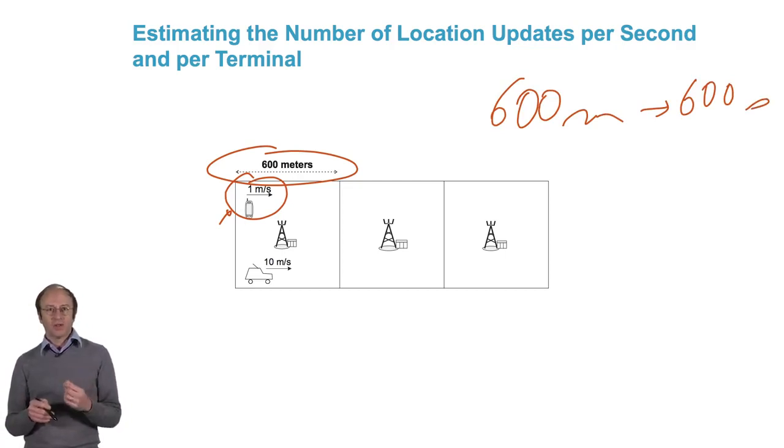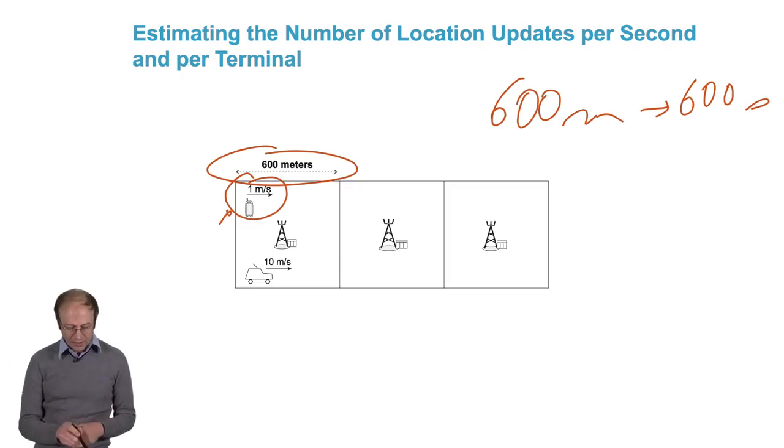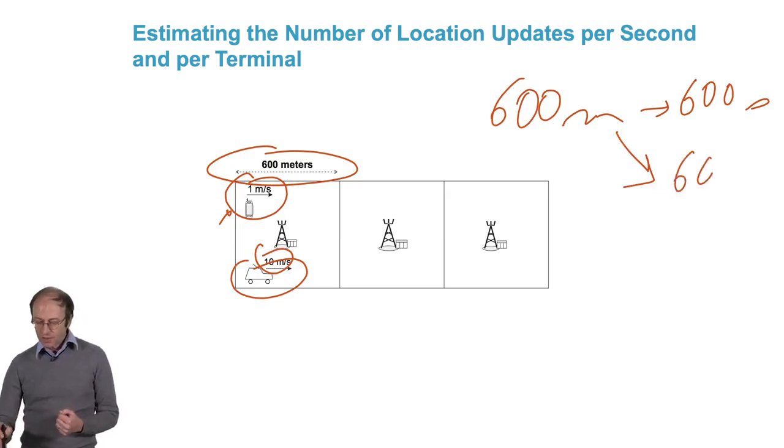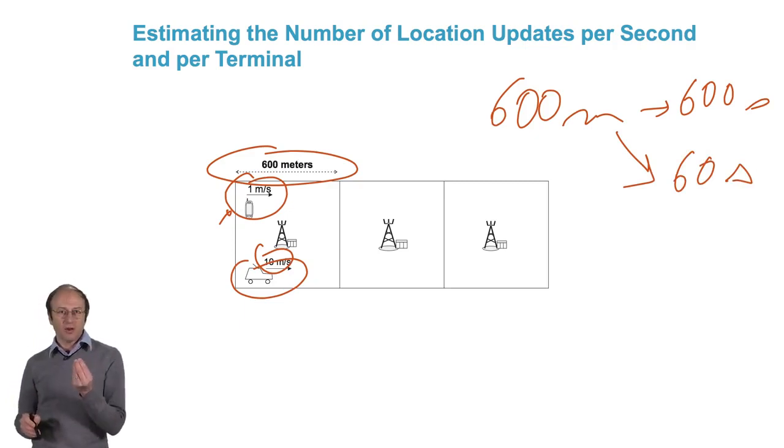Now, let's suppose that he is in his car. The speed will be closer to 36 kilometers per hour or 10 meters per second. At this point, 600 meters is covered in 60 seconds. That means that every minute, the terminal has to update its location since, on average, it changes cells every minute.